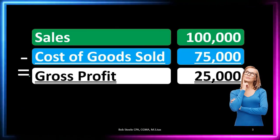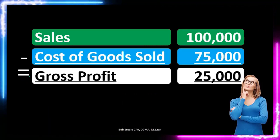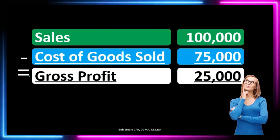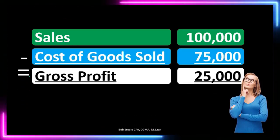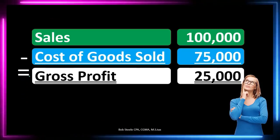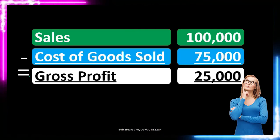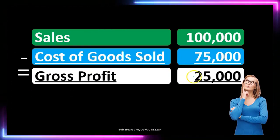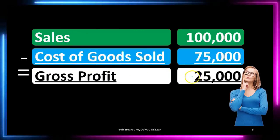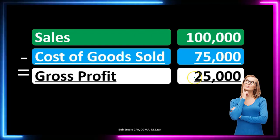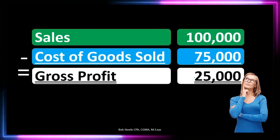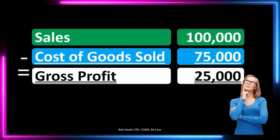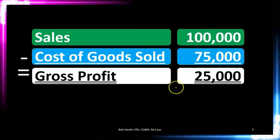It is included as a subtotal as we work down to the bottom line of the income statement — net income — because this relationship between sales and the cost of the inventory, the cost of the goods that we are selling, is such an important one.